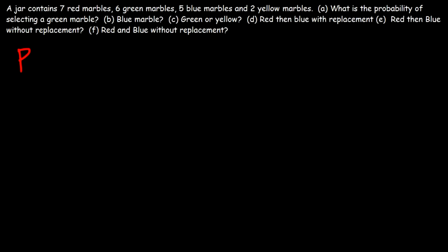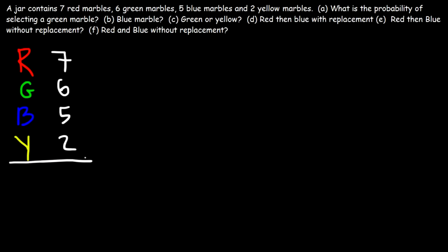Let's make a list of the different colors that we have. So we have red, green, blue, and yellow. There are seven red marbles, six green marbles, five blue marbles, and two yellow marbles. Now let's add up these numbers: 7 plus 6 is 13, 13 plus 5 is 18, 18 plus 2 is 20. So there's a total of 20 marbles in the jar.